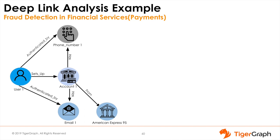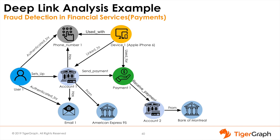So how can fraud take place in this sort of payment network, and how can deep link analysis detect it? User 1 has created and linked their account 1, which is linked to their credit card, American Express 95. As part of the setup and multi-factor authentication, they have linked phone number 1 and their email to their account. User 1 is using an Apple iPhone 6 as their device and initiates payment 1 for $500 to account 2. Up to this point, there aren't any red flags in a traditional fraud detection solution because user 1 is a brand new user with a brand new phone number and email that haven't been associated with any fraudulent transactions in the past.